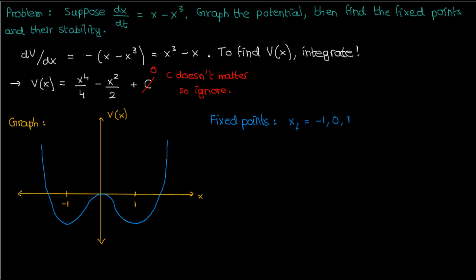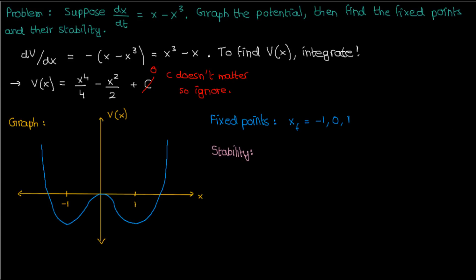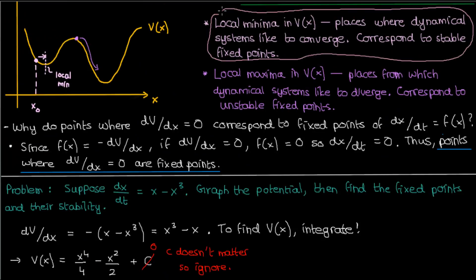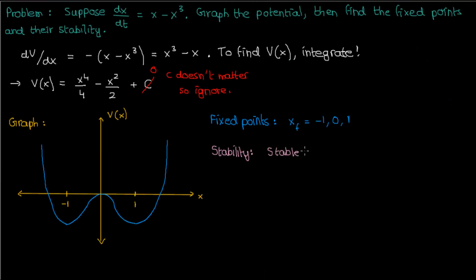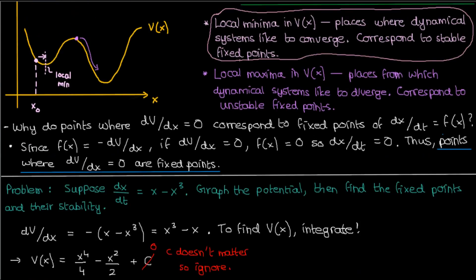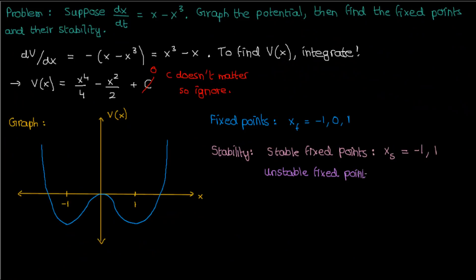And you can easily see this from the equation for dV/dx, because negative 1, 0, and 1 make dV/dx equal to 0. But what about the stability of these fixed points? Well, as we discussed earlier, local minima in the graph of potential correspond to stable fixed points, since that's where the dynamical system likes to go. It likes to go towards areas with a low potential. And as a result, x equals negative 1 and x equals 1 are our stable fixed points, since they're the minima of this potential curve. Meanwhile, unstable fixed points correspond to local maxima in the graph of the potential, because that's where the dynamical system runs away from. It would much rather go to regions of lower potential as opposed to regions of higher potential. Therefore, x equals 0 is an unstable fixed point, because it's a local maximum.